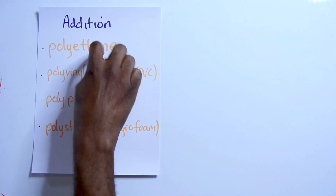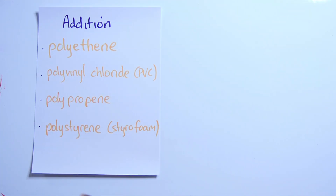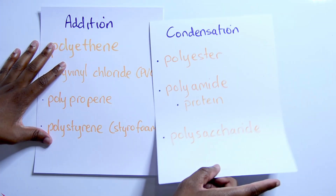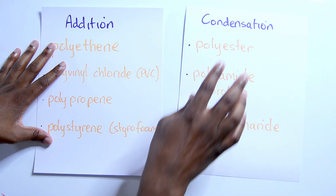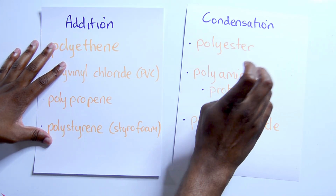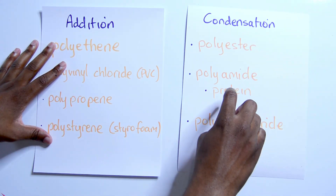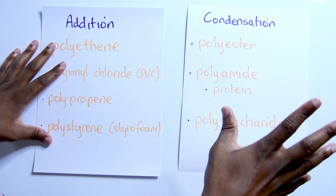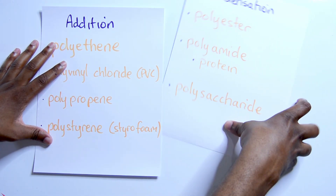In this video, I'll be examining some common polymers that you need to know for CXC. For addition polymers, I'll be looking at polyethene, polyvinyl chloride, polypropene, and polystyrene. I'll be checking out the structures of them and the linkage. And in condensation, we'll look at polyester, polyamides including protein, and polysaccharides. So let's get this show on the road.